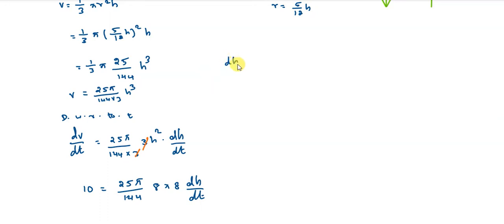Solving for dh/dt: dh/dt equals 9/10π meters per minute. This is the rate of change, the rate at which depth increases. Thank you students for watching this video.